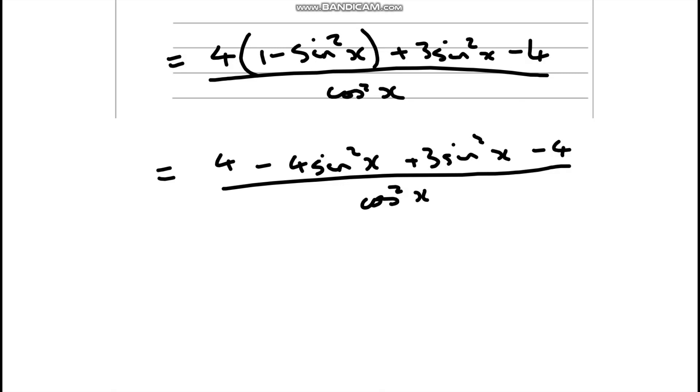Now one thing I noticed straight away is we've got a plus 4 and a minus 4 so they're going to cancel out. And then we've got negative 4 sine squared x plus 3 sine squared x, which is going to give me negative sine squared x over cos squared x.